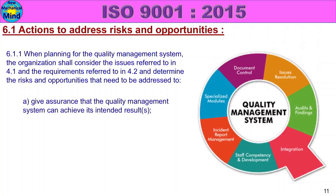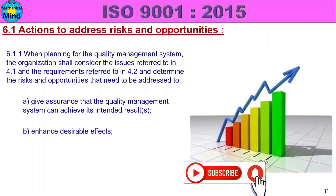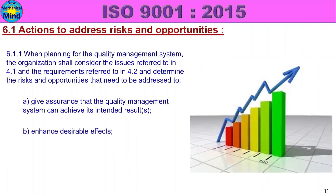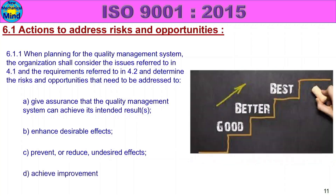Give assurance that the quality management system can achieve its intended results. In the quality management system, let's look at the results and achieve improvement. Improvement is the result.